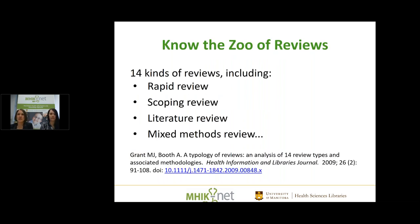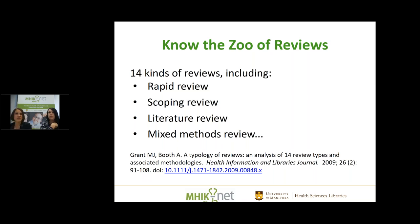There are many other kinds of reviews — we call it the 'zoo of reviews' — 14 different kinds. This comes back to whether a systematic review is the best approach, or whether you want a rapid review, scoping review, or literature review. A literature review has less robust methodology. In a rapid review, you might still have rigorous methodology but just need a faster answer.